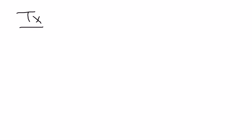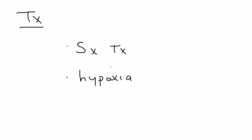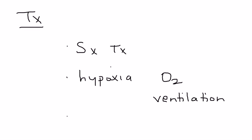For treatment, unfortunately fat embolism has no actual specific therapy. The most important thing is symptomatic treatment. Because of the hypoxia, you have to give supplemental oxygen and probably some ventilation until the person can start breathing adequately on their own and have a good pulse ox. You also have to treat the fracture — early immobilization will help reduce the incidence of fat embolism as well.